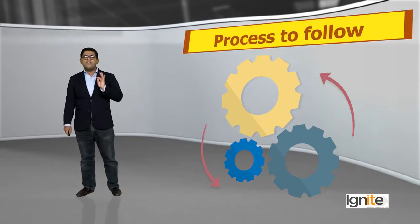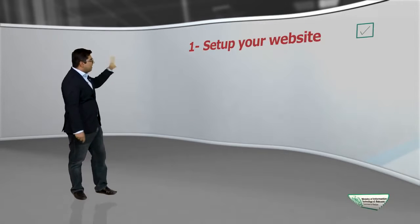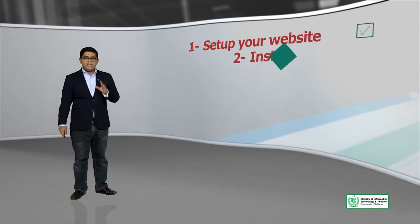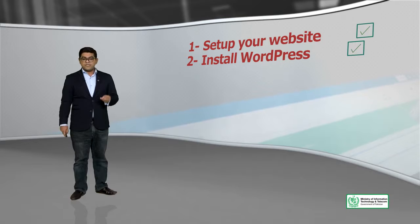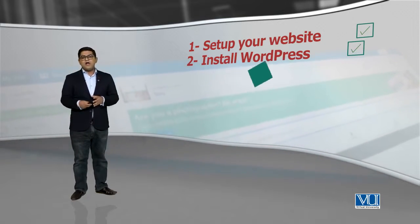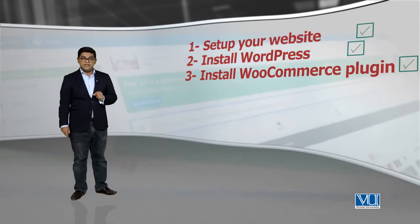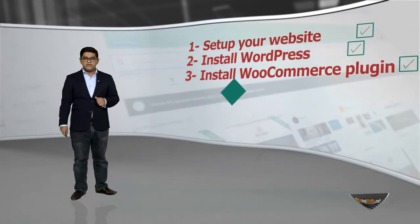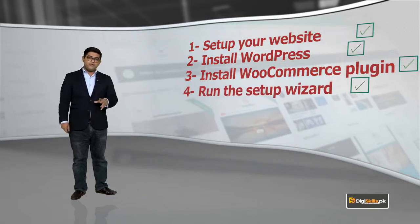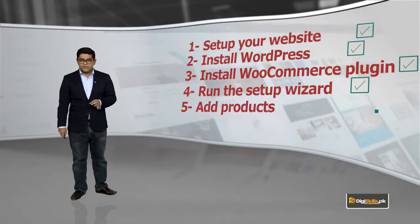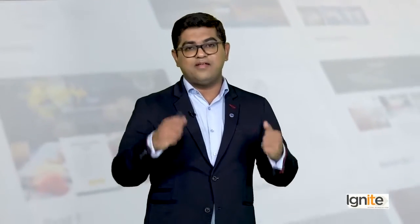Process to follow — ye process bada simple hai. Number one: aap ne apni website set up karni hai. Pher aapne WordPress ko install karni hai — WordPress ko install karne ka bada simple tariqa hai. Pher aap us mein WooCommerce plugin set up karni hai — aap plugins mein jaenge aur wahaan se you'll be able to install the WooCommerce plugin. You will run the setup wizard which will allow you to easily know ke kis tarah se aapne store ko set up karni hai. Aap us mein products daalenge, and that's it — is itne aasaan tarike se aap apni online dukaan set up kar sakte hain.